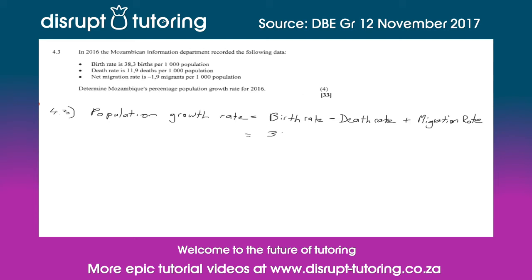Therefore the population growth rate will be 38.3 minus 11.9 and then plus negative 1.9. Putting this sum into your calculator, you get that the population growth rate is 24.5, and this will be per thousand — so this isn't the percentage yet.